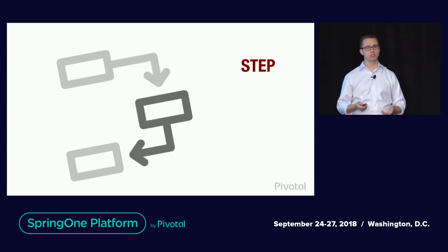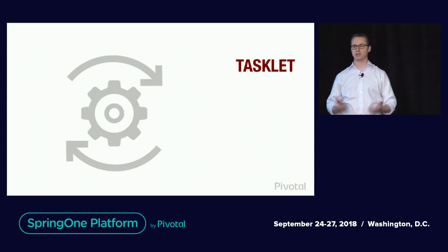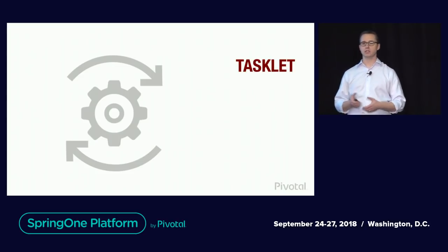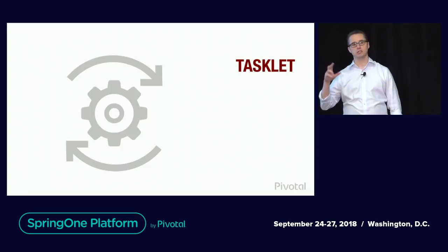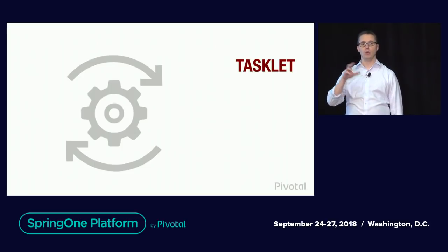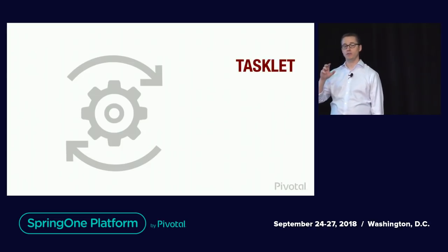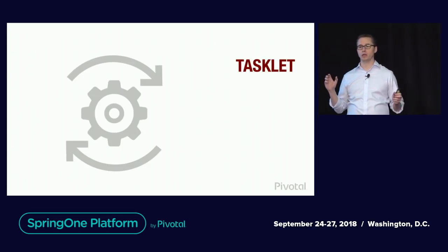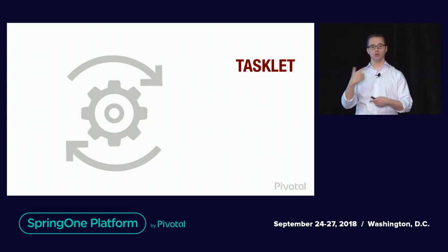Within a step, most Spring Batch step types are a tasklet type. A tasklet is essentially an interface we provide within Spring Batch — it has a single method called execute, and we execute that within the scope of a transaction. If you implement the interface yourself, we handle whatever you do in that transaction, and then you choose whether to run it again in a loop or just run it once and move on to the next step.